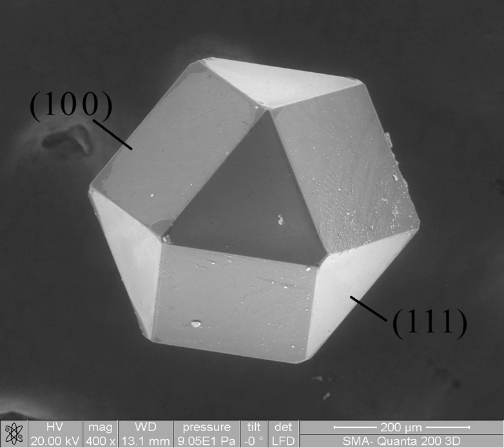Macrostructure is the appearance of a material in the scale millimeters to meters. It is the structure of the material as seen with the naked eye.